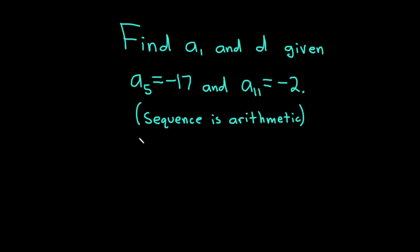Hello, in this video we're going to do a problem involving arithmetic sequences. The question is to find a₁ and d given a₅ and a₁₁. In this case, a₅ is -17 and a₁₁ is -2. The sequence is arithmetic. Let's go ahead and carefully work through its solution.